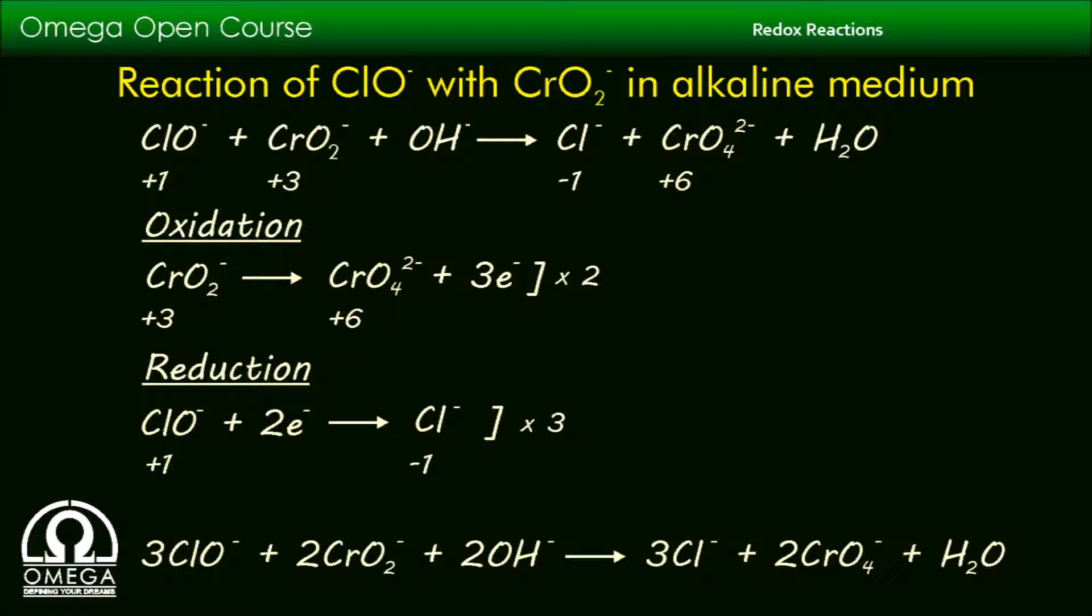All the atoms except O and H are balanced. Now we need to balance oxygen and hydrogen. There are 7 oxygen atoms on the reactant side and 8 on the product side, so we need to increase the number of oxygen atoms by 1.